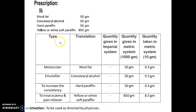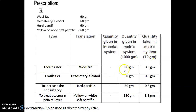The factor is calculated as quantity required divided by quantity given: 10 divided by 1000 equals 0.01. The prescription (Rx) is: wool fat 50 g, cetostearyl alcohol 50 g, hard paraffin 50 g, yellow or white soft paraffin 850 g. The formula table shows the role or category of ingredient, the name of ingredient, quantity given in metric system for preparing 1000 g, and quantity taken to prepare 10 g. Wool fat is used as a moisturizer; quantity given is 50 g, so quantity taken is 0.5 g.